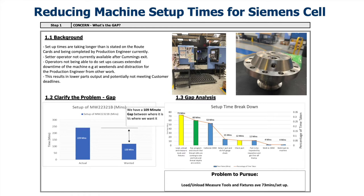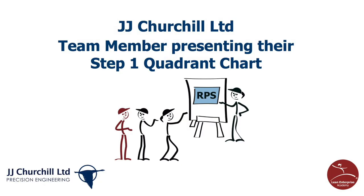They will then clarify the gap, analyze the gap, and from that analysis identify the problem to pursue. Take some time to review the information on screen. Here is a short clip of a JJ Churchill team member presenting their step one quadrant chart for rapid problem solving.